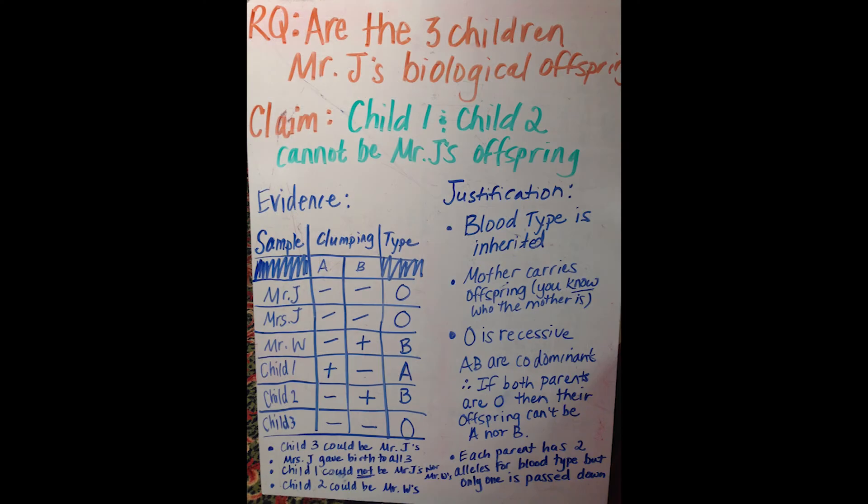This final example shows actual student work from our blood typing lab, and I just love this first justification. The idea that blood type is inherited is an important concept — if blood type was not inherited, then the data wouldn't have any purpose. It's a great example of tying the core concepts of science back to the data to justify why that data is worth looking at.